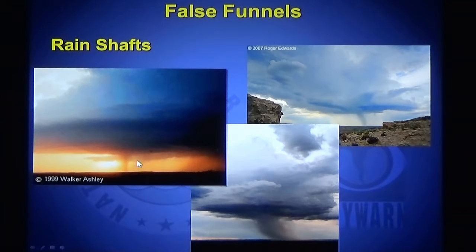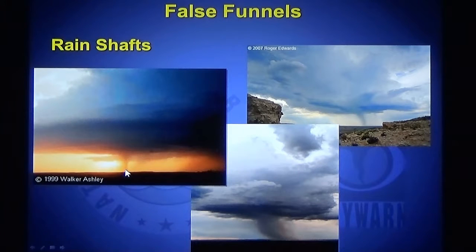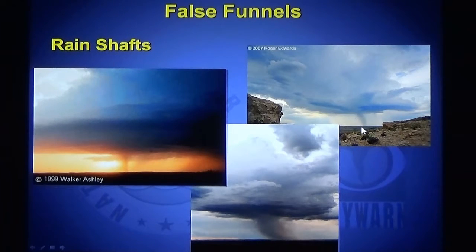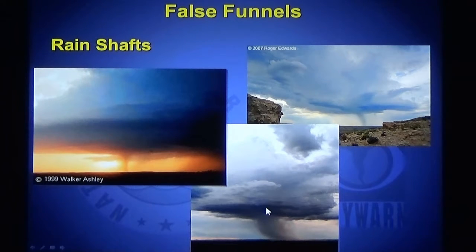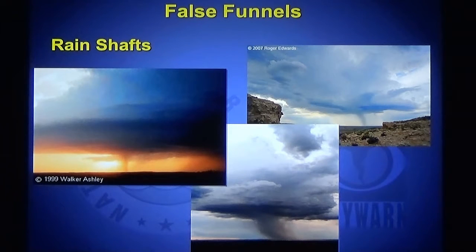Another thing mistaken for a tornado is a rain shaft. In this picture, it is not raining here, it is raining here — that's just rain falling out of the cloud. Is it spinning? The answer is no. In the picture on the top right, same thing: it is not raining here, it is raining here. Sure looks like a tornado, but there's no rotation — it's not a tornado, it's one of those look-alikes. And in the third picture, the same thing — this is just rain falling out of the cloud with no rotation, a rain shaft and not a tornado. We need to be very careful when reporting tornadoes that we're sure there is circulation, there is rotation.